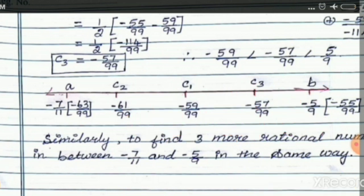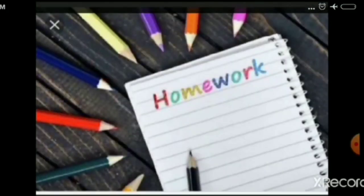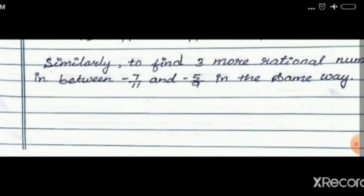Students, I think you all understood. Test yourself: similarly, find three more rational numbers between minus 7 by 11 and minus 5 by 9 in the same way using the average method. Thank you, students.